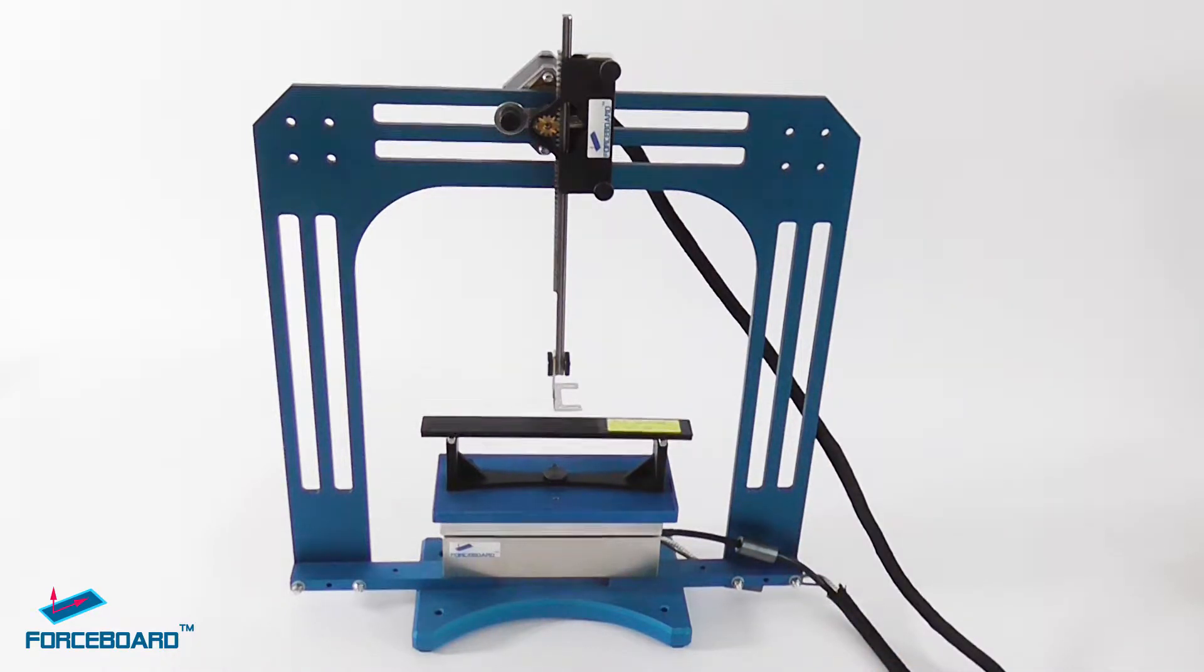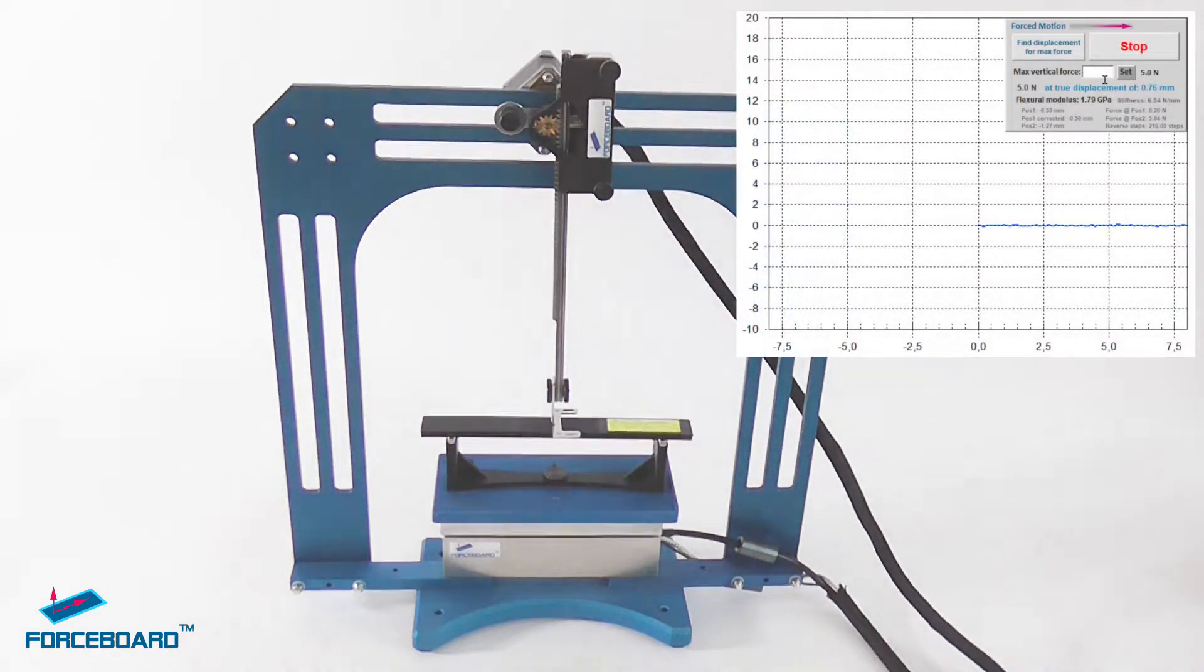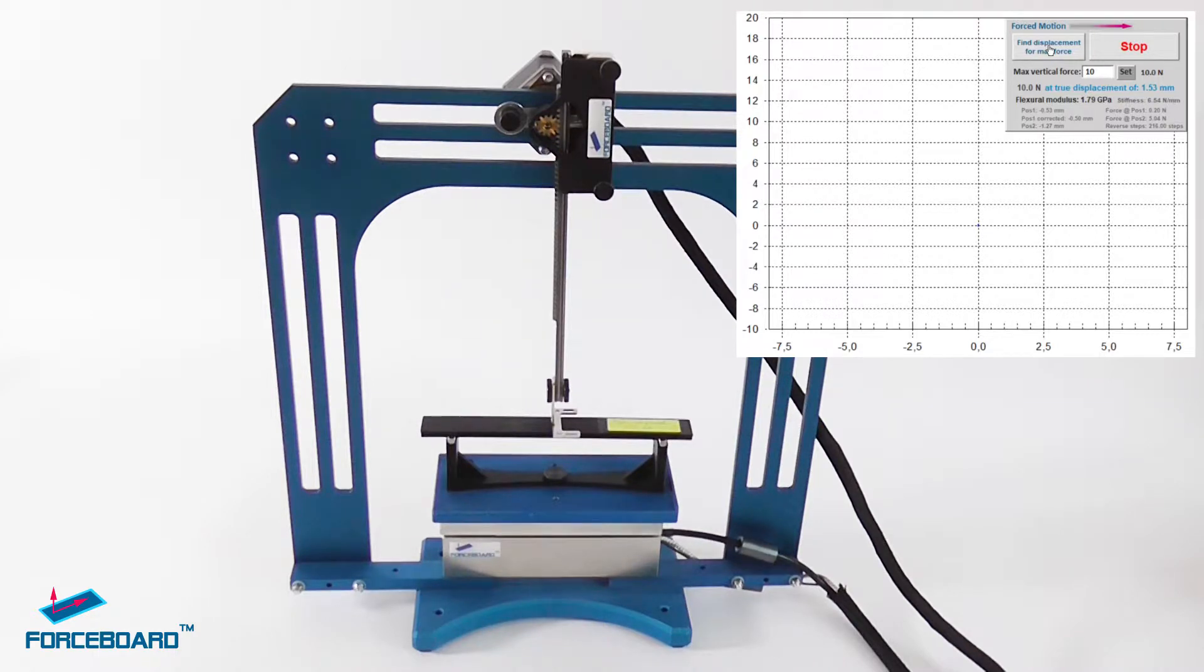We tell the program to move to 10 Newtons, and when it does, it will automatically calculate and present to us the flexural modulus. Here it is compressing the beam up to 10 Newtons, and then it stops. You can see the flexural modulus indicated in this box over here, and it's 1.82 gigapascals.